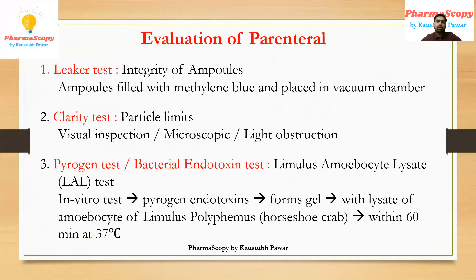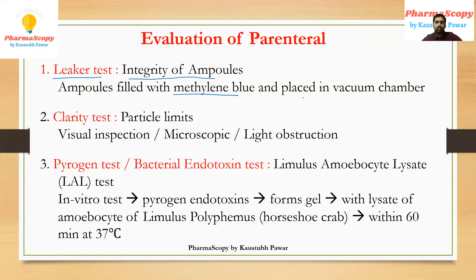Moving to evaluation parameters — there are 4 important tests. First is the leaker test (leaking test), used to study the integrity of ampoules — whether ampoules have cracks, holes, or defects. Ampoules are filled with methylene blue solution and placed in a vacuum chamber. When pressure is applied, if there is any leakage the methylene blue solution will come out, allowing us to know whether there are any leakages or cracks in the ampoules.